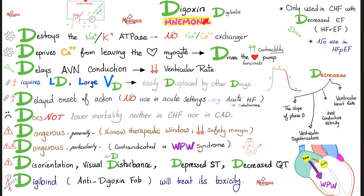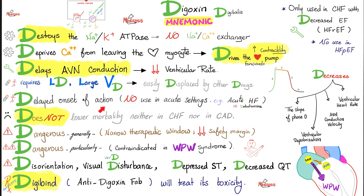If your patient is suffering from digoxin toxicity, give the antidote: Digibind, which binds digoxin. These are antidigoxin fragment antibodies — by binding digoxin, it cannot work and its toxicity decreases until your body eliminates the drug. For CHF use, only use digoxin where there is decreased ejection fraction — systolic failure. Do not use digoxin if the ejection fraction is preserved. To summarize: it destroys the sodium-potassium ATPase; the secondary won't work; it drives the pump forwards increasing contractility; it delays AV nodal conduction decreasing conductivity and heart rate.